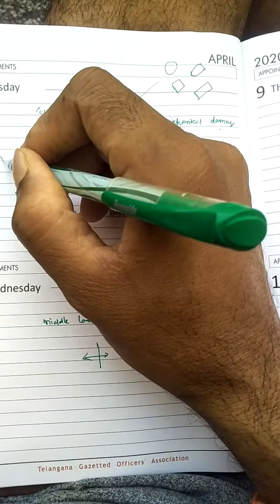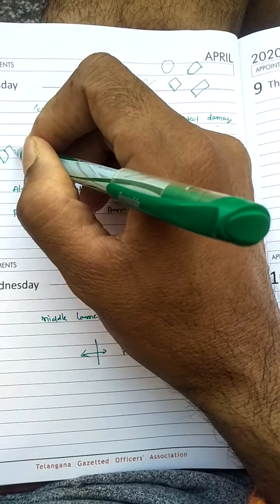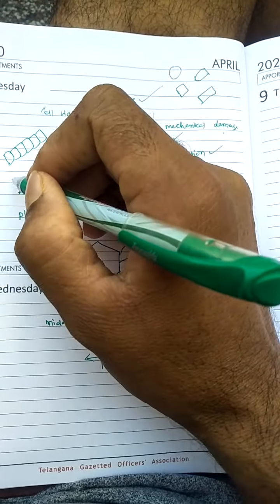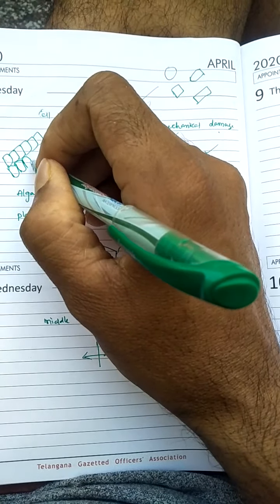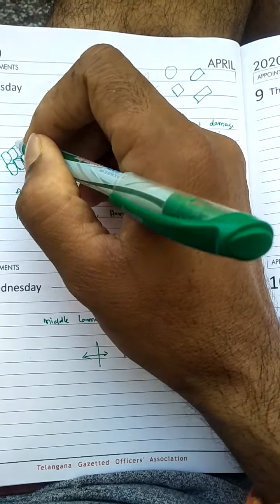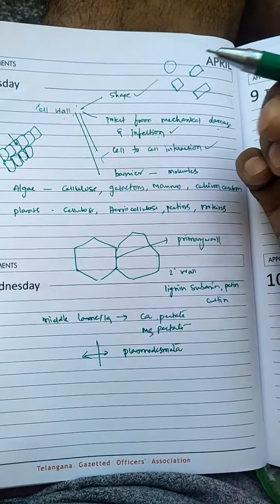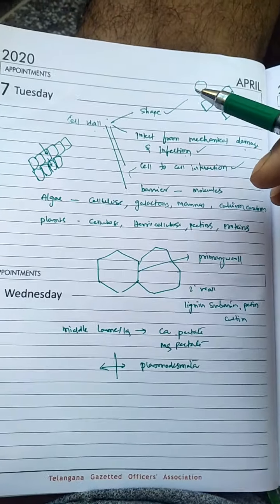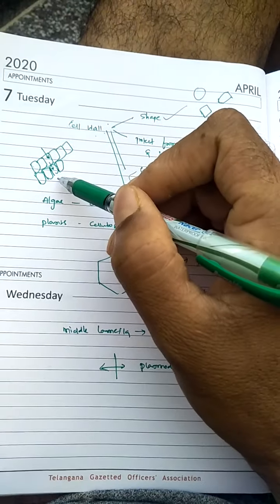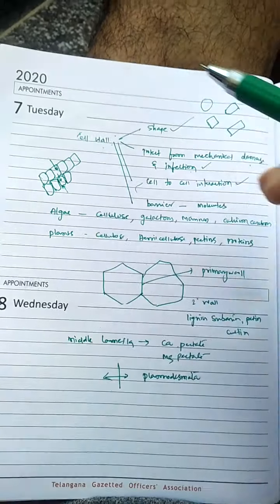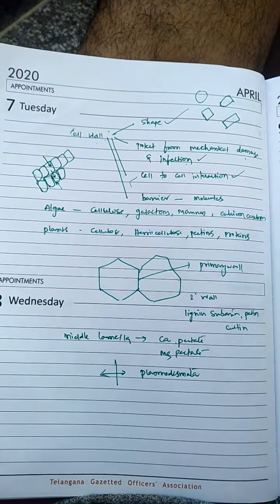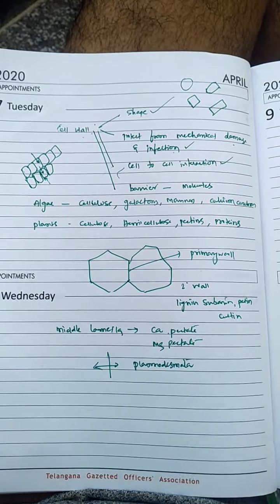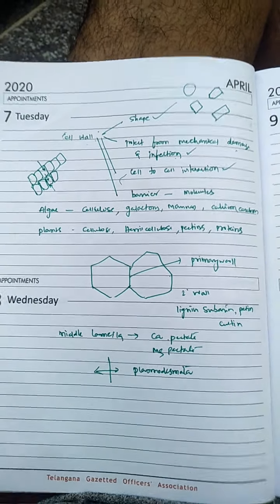The next function is cell-to-cell interaction. Any tissue is mainly made up of many cells. If any cell is affected by an external factor, it can automatically pass that information to another cell, so the cell wall helps protect from various external factors such as microorganisms, temperature, light, and so on.